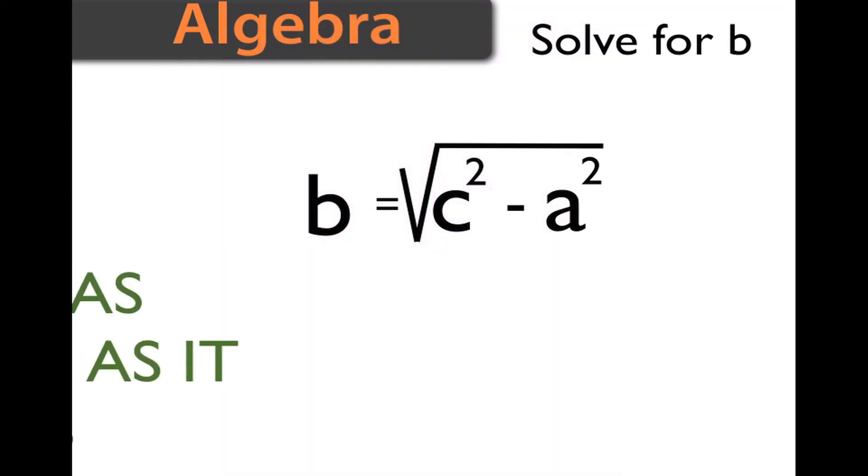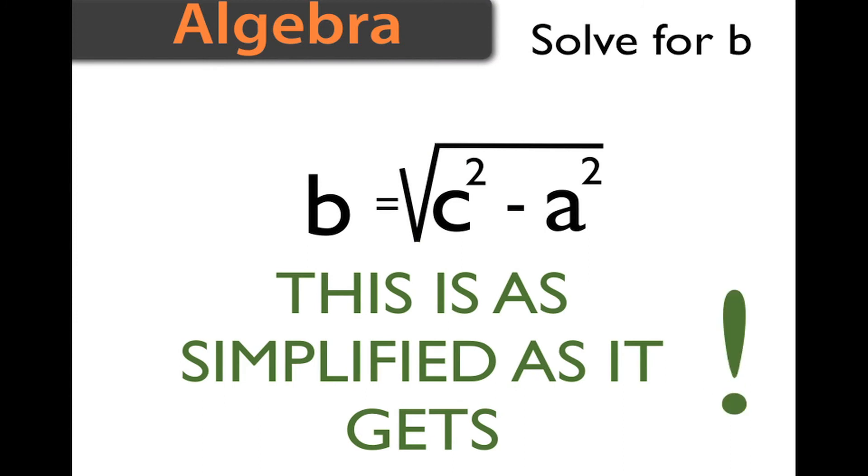Here's an important note. This is as simplified as it gets. You cannot remove the square root and say b equals c minus a. That is not correct. Because there's a subtraction problem, or even if it were an addition problem, that breaks the rules of algebra and you just can't do it. So this is your final answer.